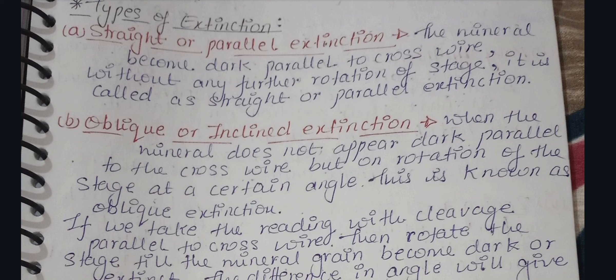This means the mineral will appear dark when the cleavage is parallel to the cross wire, without any further rotation of the stage. The mineral will appear dark when it is parallel to the cross wire. The cross wire refers to the center position in the microscope eyepiece. So straight or parallel extension occurs when the mineral goes dark parallel to the cross wire with no further rotation needed.